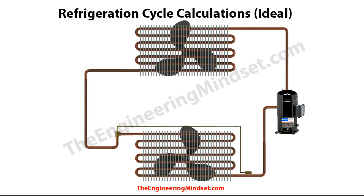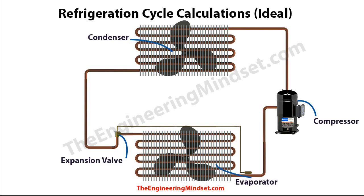Here we've got our basic refrigeration cycle. The components are: the compressor, the condenser, the expansion valve, and the evaporator. The compressor compresses the refrigerant and pushes it around the system. The condenser rejects the unwanted heat from the system. The expansion valve expands the refrigerant, and the evaporator absorbs the unwanted heat coming in from the building and produces the cooling which goes out to the building.